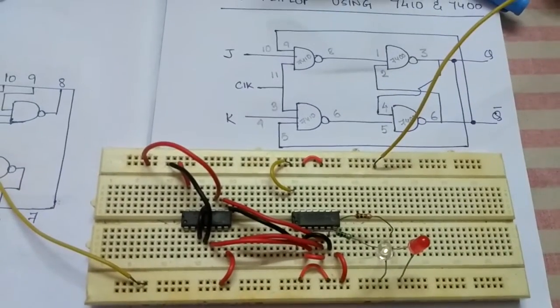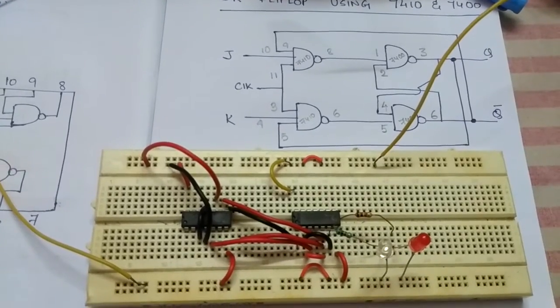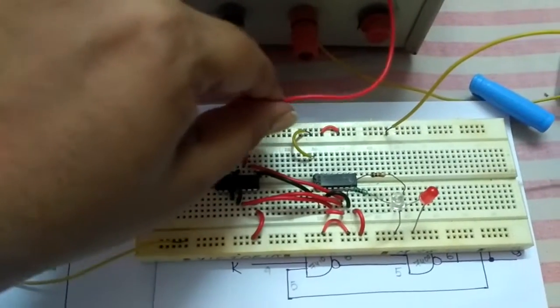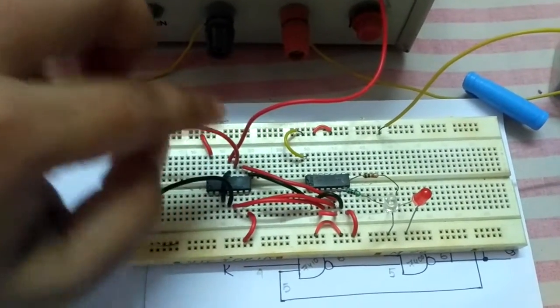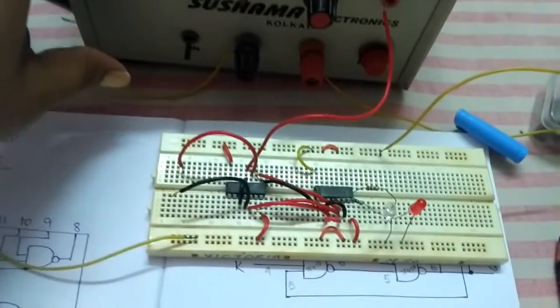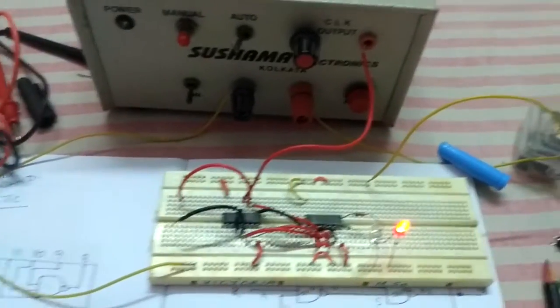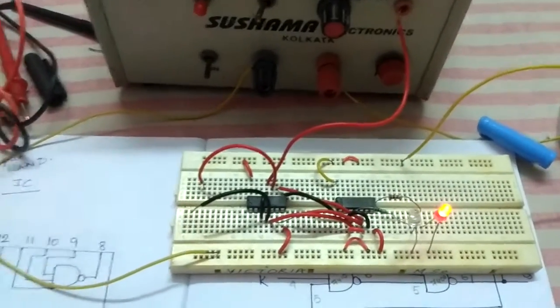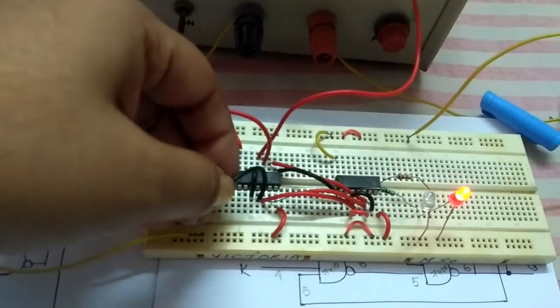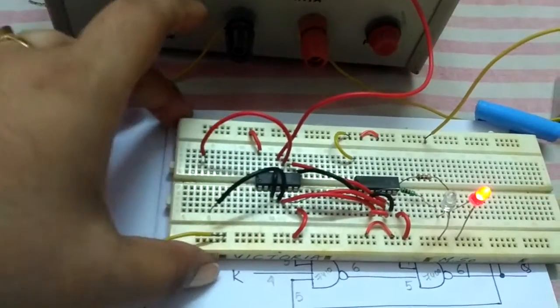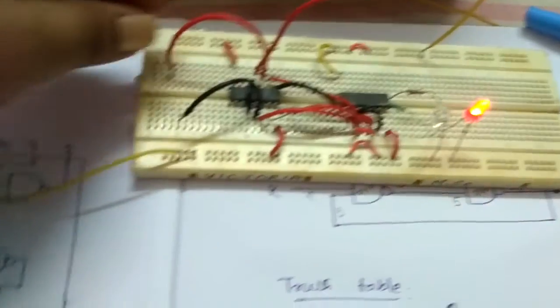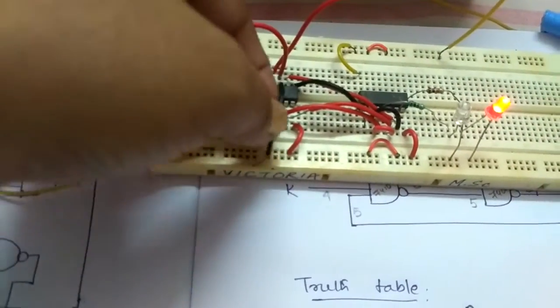I hope the circuit is clear now. Let us connect the clock and check the truth table. I have connected the clock as you can see in pins 3 and 11, and I'm switching on this power supply. I have switched on the power supply and as you can see when it's zero zero something will be retained. Now suppose I'll connect both J and K to zero.